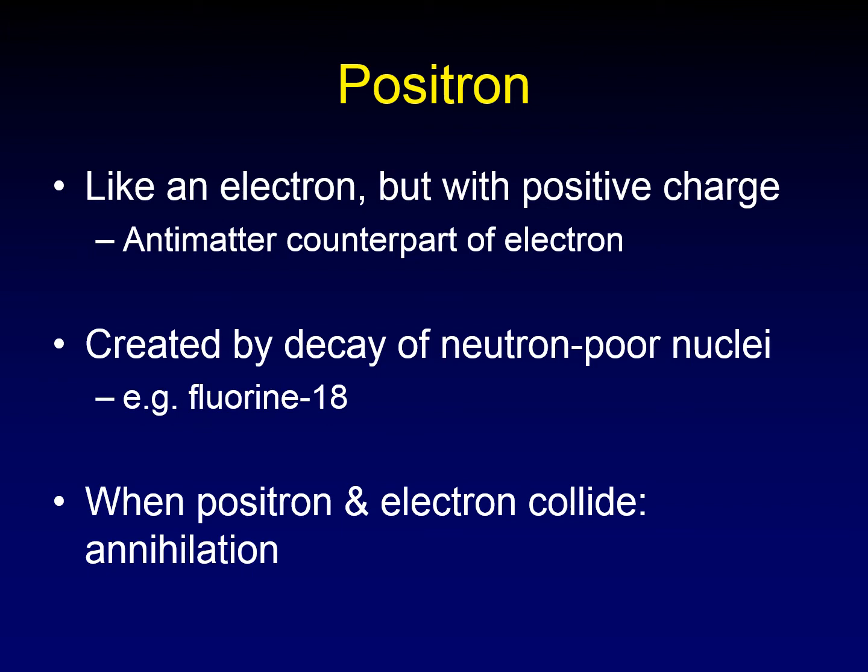One way that a positron is created is by the decay of a nucleus that is neutron-poor — that it doesn't have enough neutrons relative to its protons. An example of this is fluorine-18. Fluorine should have atomic weight 19 to be stable. If there's only 18, if it's shy one neutron in the nucleus, it's unstable.